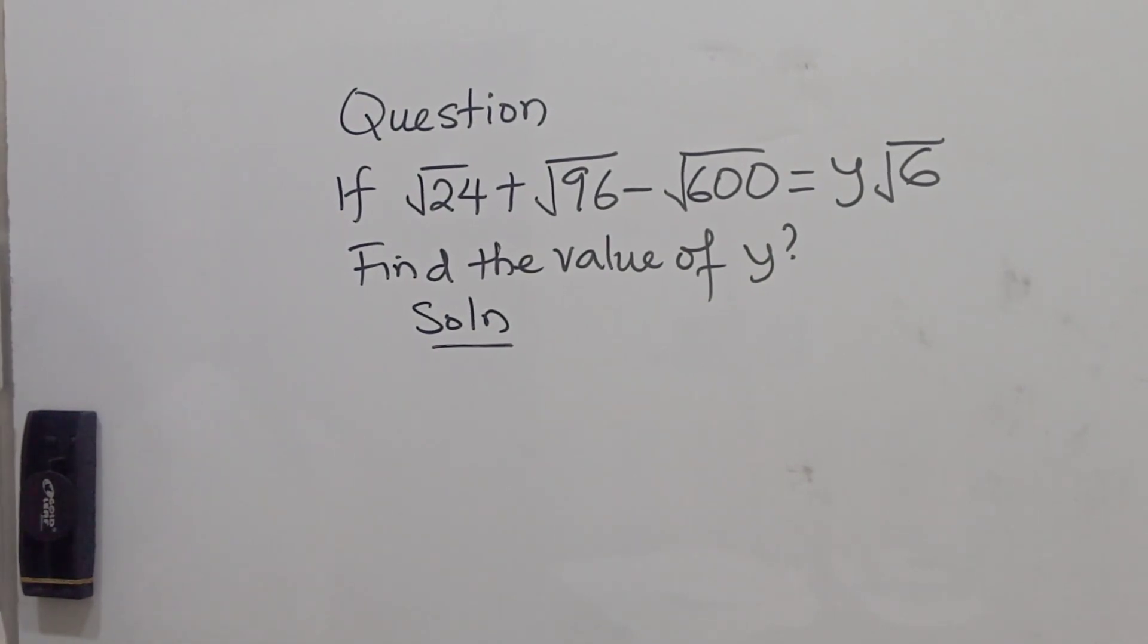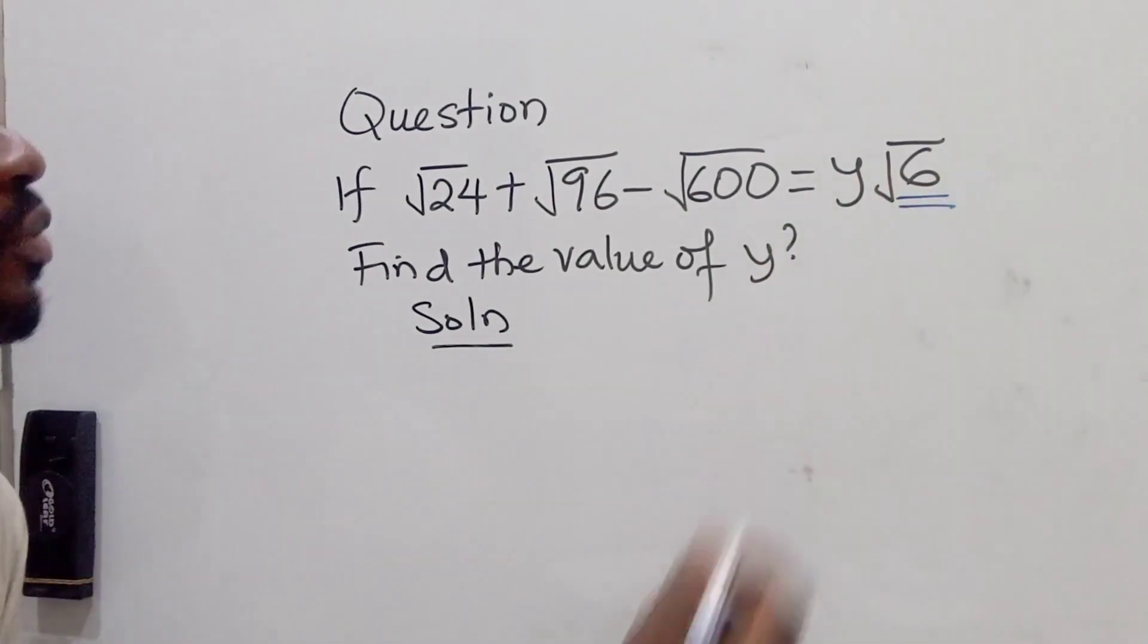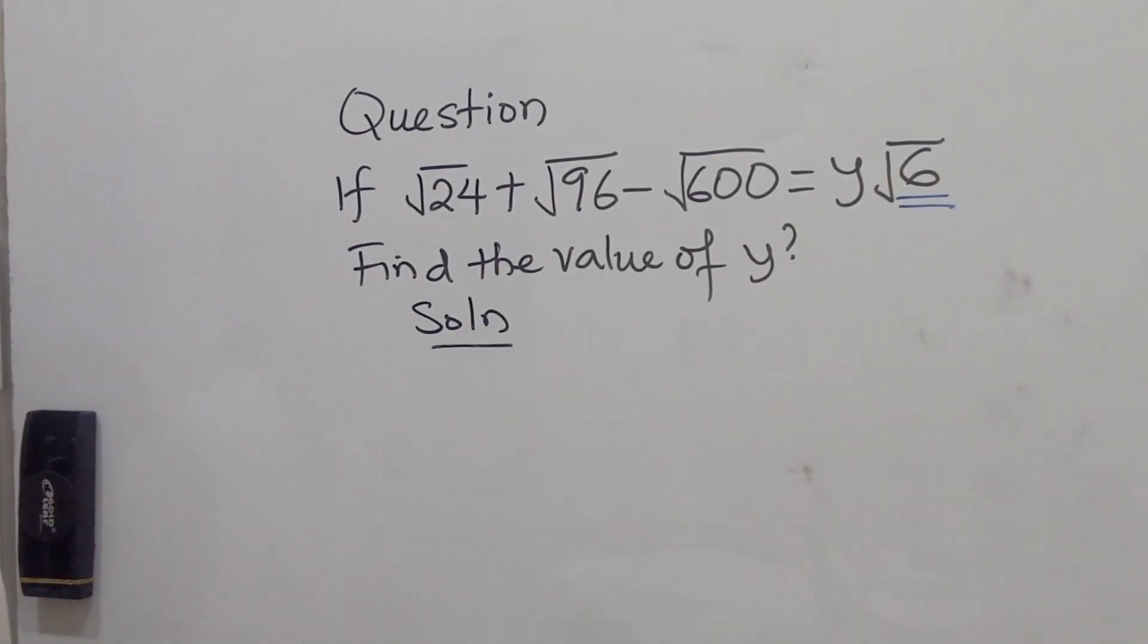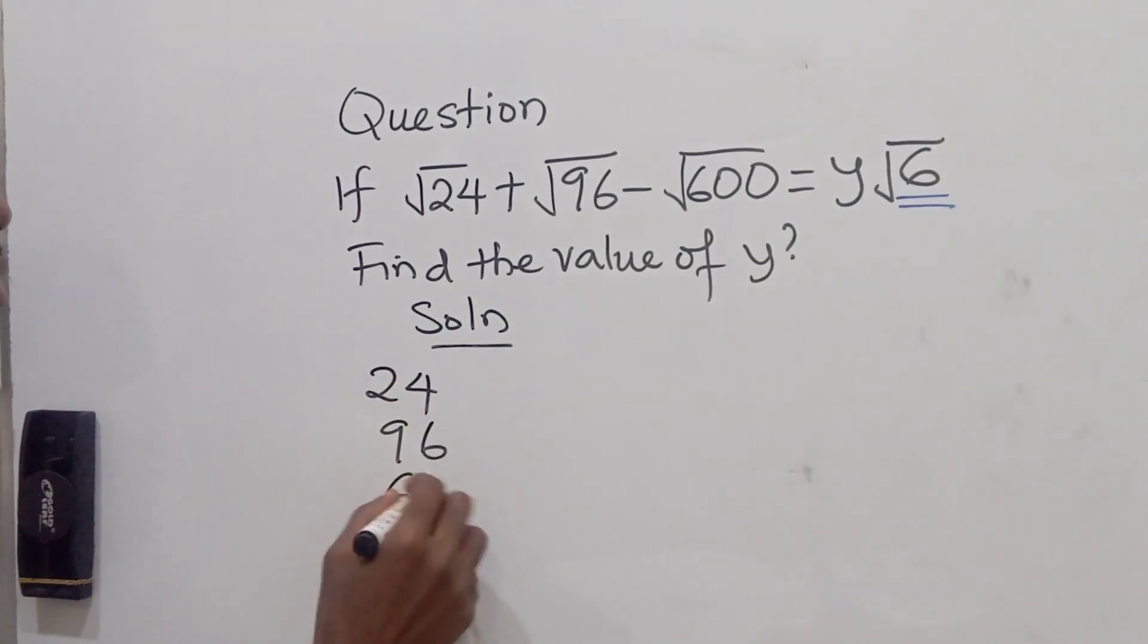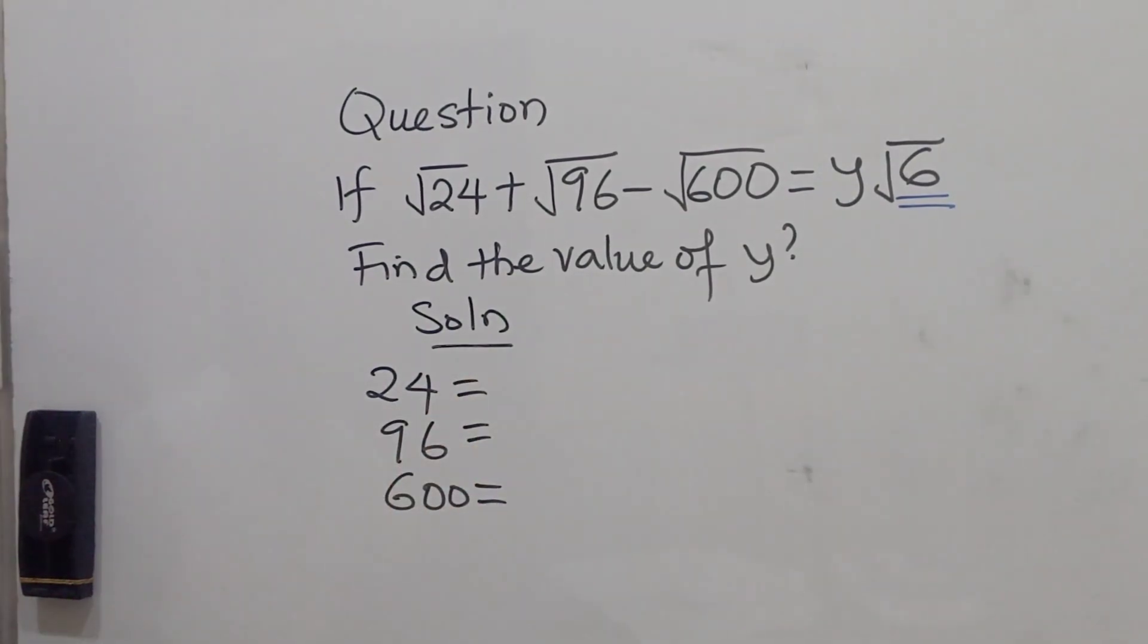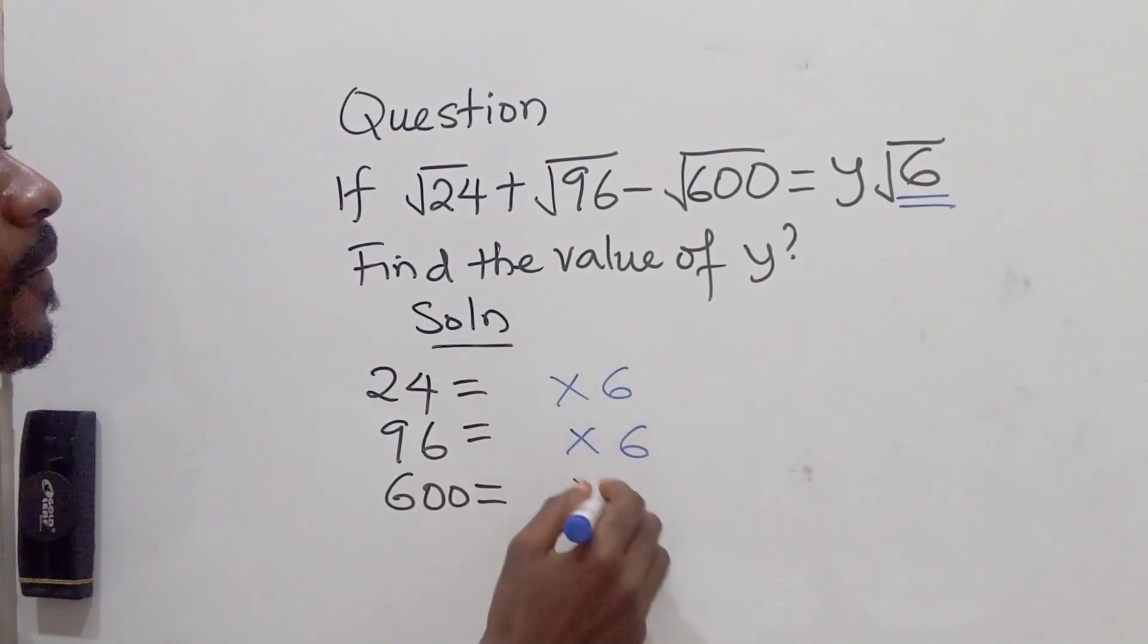So the basic thing we want to get here is we have the surd of root 6 over there. So we want to express 24, 96, and 600. We want to express these values as the product of 6.